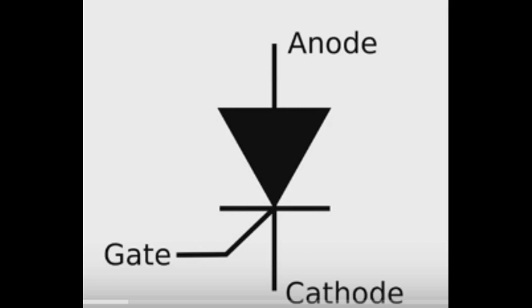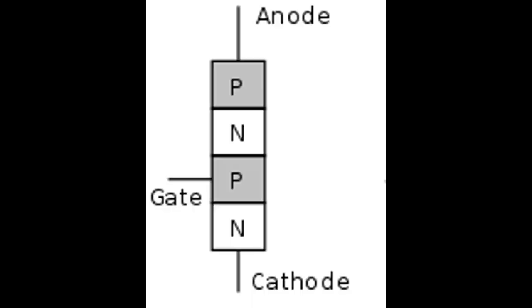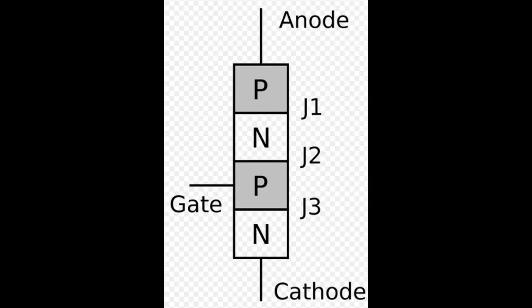The main terminals labeled anode and cathode are across all four layers. The control terminal called the gate is attached to P-type material near the cathode.